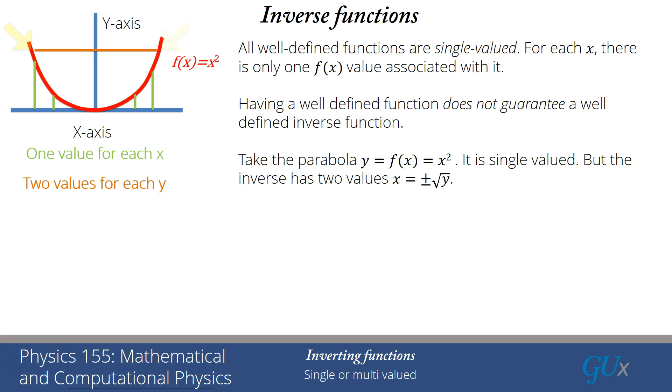But the inverse has two values as given by the brown line. When y is equal to the value where that brown line intersects, there are two x values that correspond to that y value, one at plus square root of y and the other at minus square root of y.